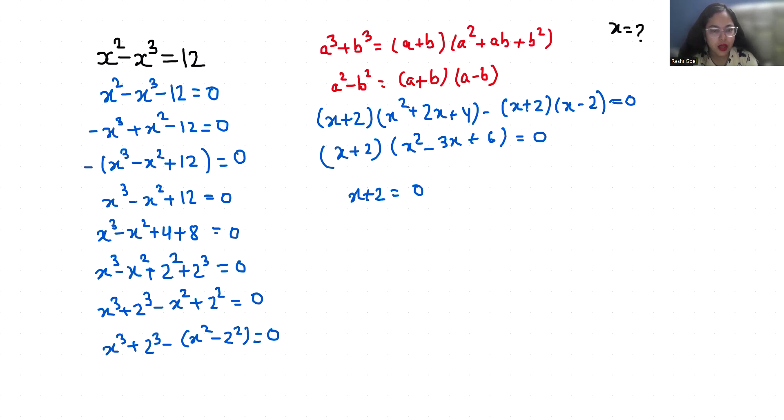So x is minus 2 and here this is a quadratic equation so I am going to use the quadratic formula. That is x is equal to minus b plus minus under root b square minus 4ac by 2a, where a is coefficient of x square, b is coefficient of x and c is the constant.